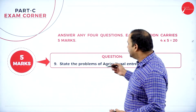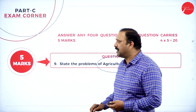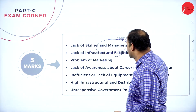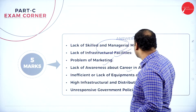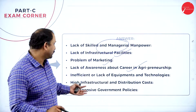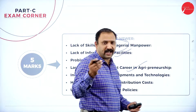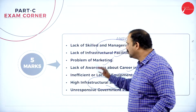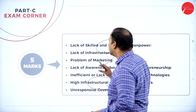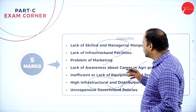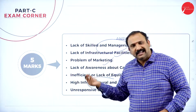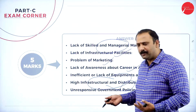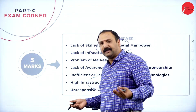The five-mark question: state the problems of agricultural entrepreneurship. These include lack of skilled and managerial manpower, lack of infrastructure facilities, problems of marketing, lack of awareness about careers in agri-entrepreneurship, inefficient or lack of adoption of new technologies, high infrastructure and distribution costs, and unresponsive governmental policies.